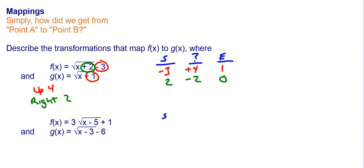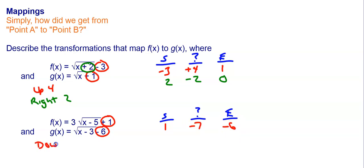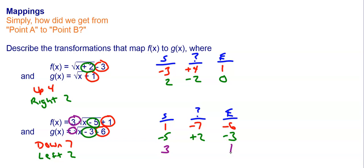Looking at the bottom example: on the outside, starting at 1 and ending at negative 6 — to get from 1 to negative 6, subtract 7, so we go down 7. On the inside, starting at negative 5 and ending at negative 3 — to go from negative 5 to negative 3, add 2, so we go left 2. Both are positive so there's no flipping. But in front, I have a 3 on one and a 1 on the other — that's 3 times versus 1 times the square root. So 3 times what gives me 1? That's one-third. This is a compression of one-third, because the number is between 0 and 1.